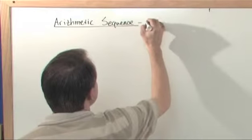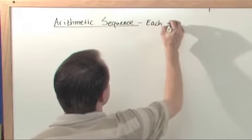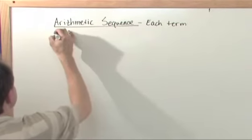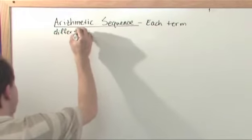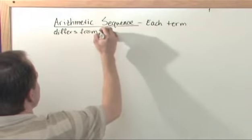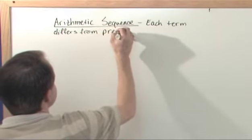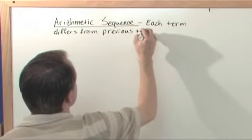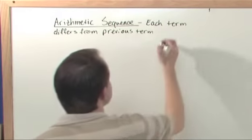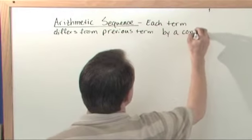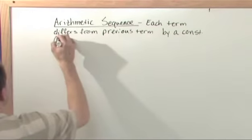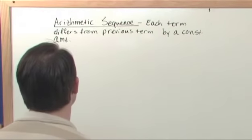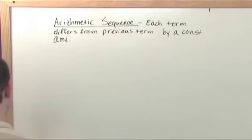So what this is, is a sequence so that each term in the sequence differs from the previous term by a constant amount. That's literally what it means. The constant difference is denoted d, is what we're going to talk about here.